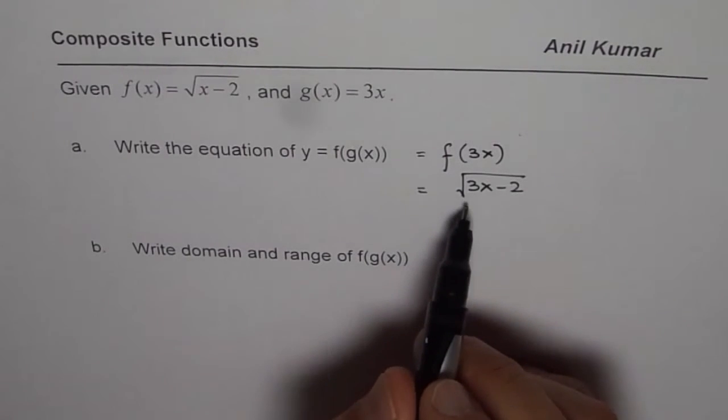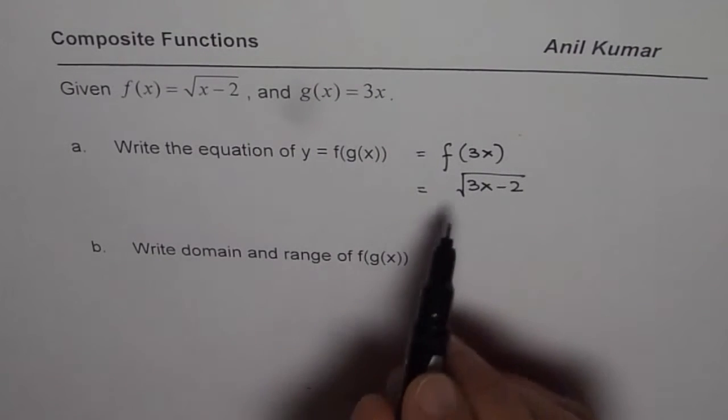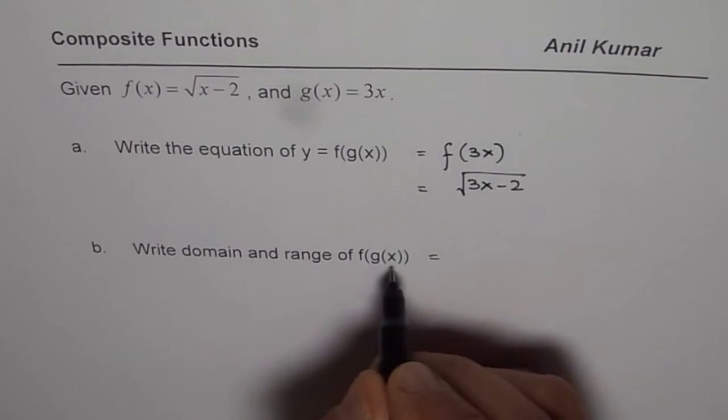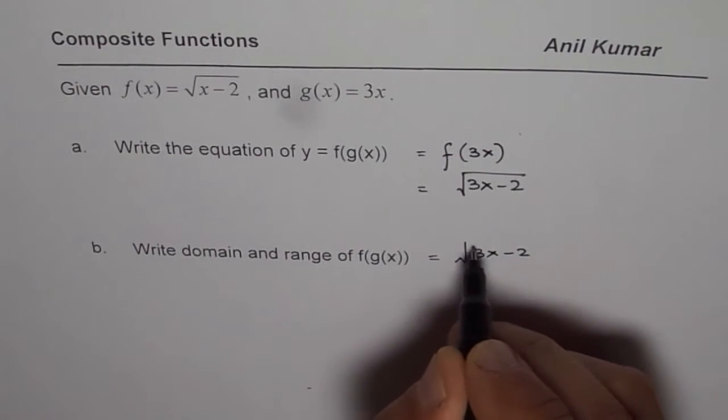Now from here we can write the domain and range of the composite function. The composite function f(g(x)) as we found earlier is square root of 3x minus 2.